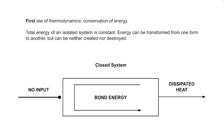Returning to the first law of thermodynamics: there is a conservation of energy. The total energy of an isolated system is constant. If we have a closed system, we have a certain amount of free energy; that free energy is used up and becomes bond energy, then dissipated as heat. Once you use up the free energy, you end up with bond energy and that's it — the system asymptotes to death. Energy can be transformed from one form to another, but it can be neither created nor destroyed — no free lunch.